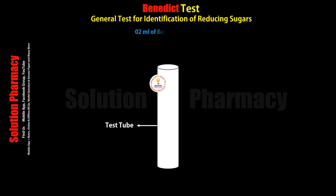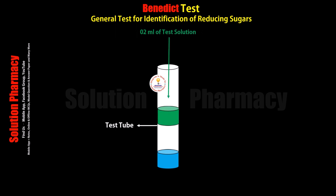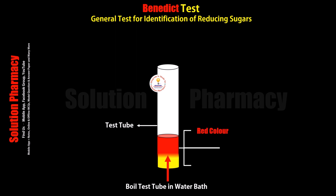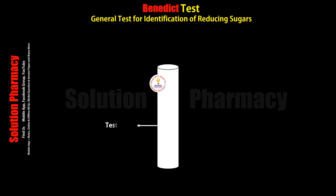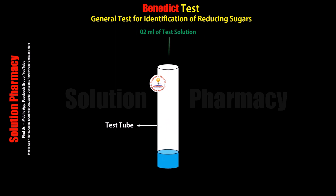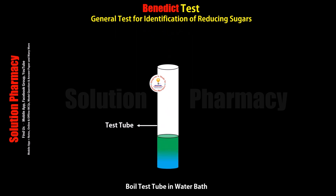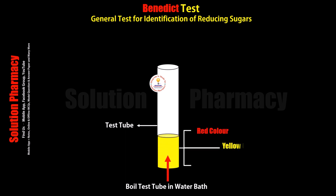Welcome to the channel. Today in this video we will tell you about the Benedict test, its principle, and also explain the procedure of Benedict test through animation. Benedict test is performed to detect the presence of reducing sugar in any sample. Reducing sugars include, for example, glucose, fructose, lactose, and maltose. Glucose and fructose are monosaccharides, and maltose and lactose are disaccharides.